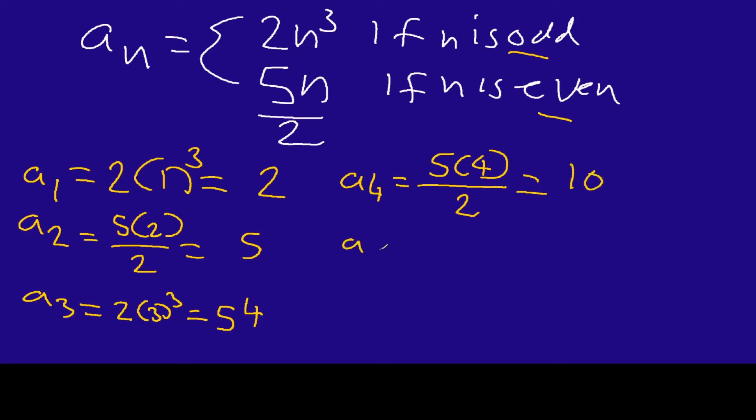And our last one, a_5. This time we're doing odd, so it's going to be two times five to the third power. Five times five is 25, 25 times five is 125, and 125 times two is 250.